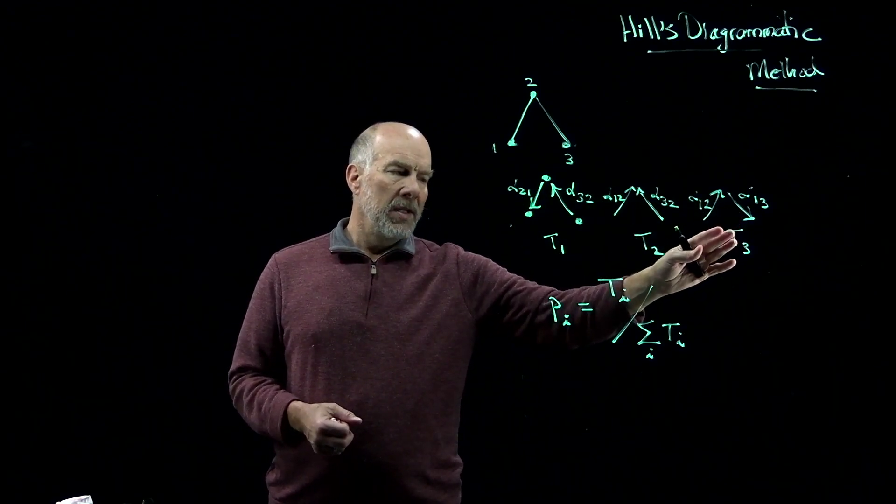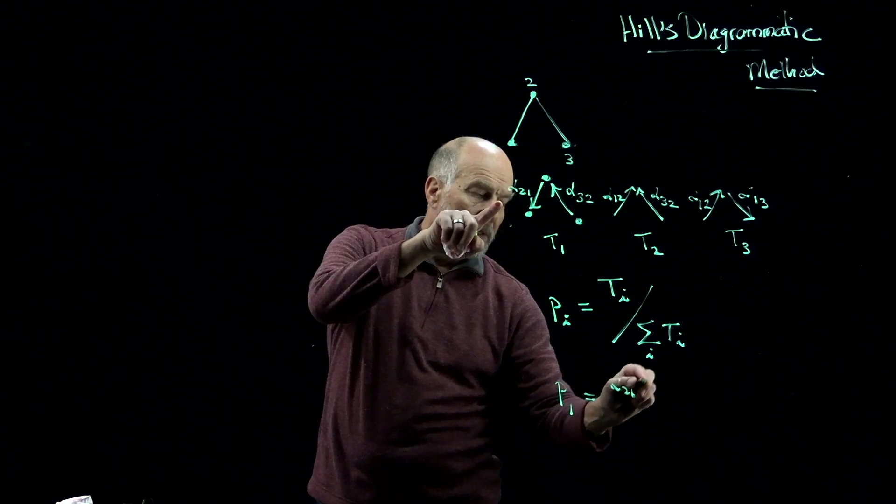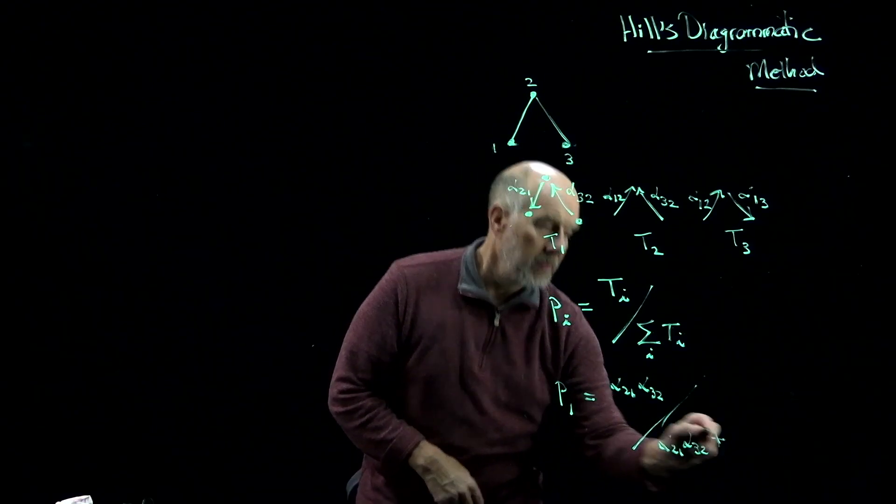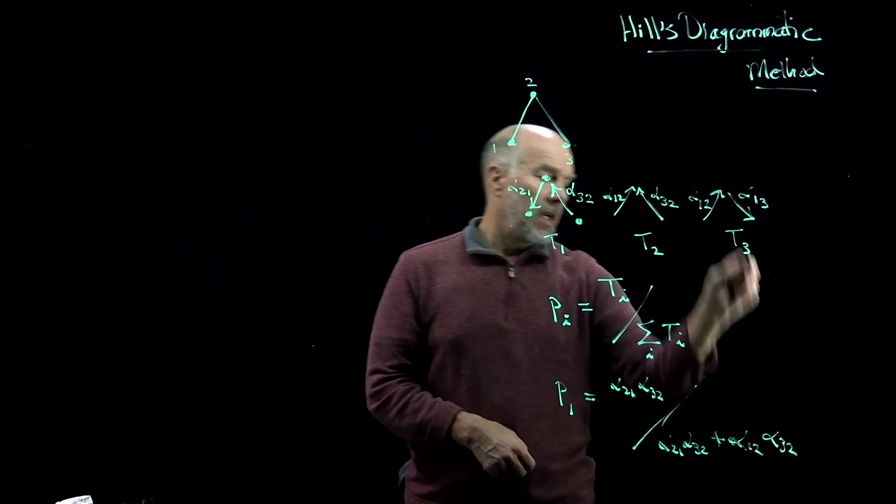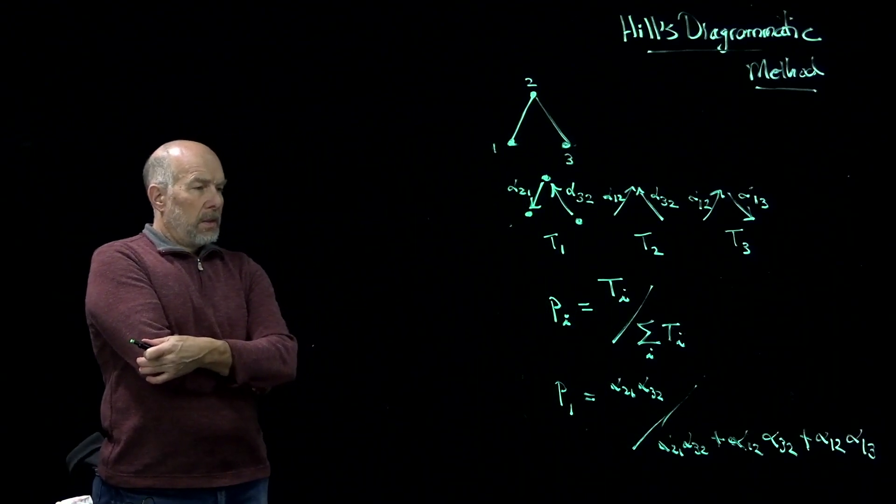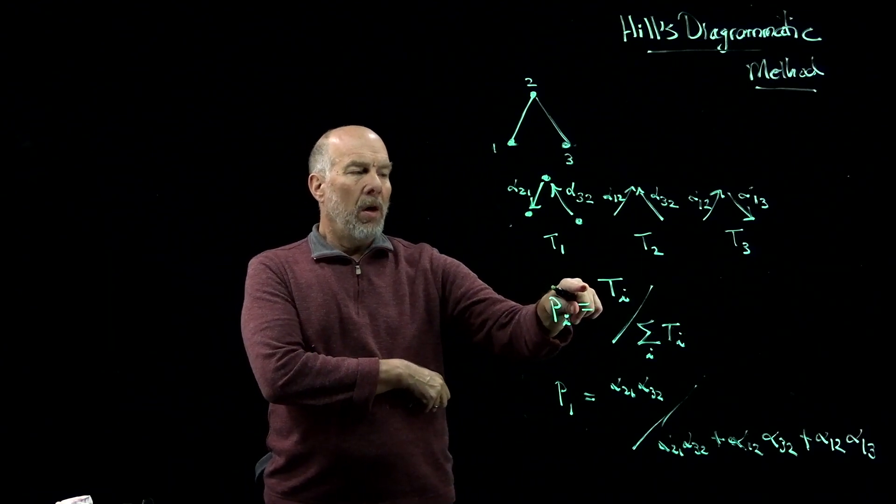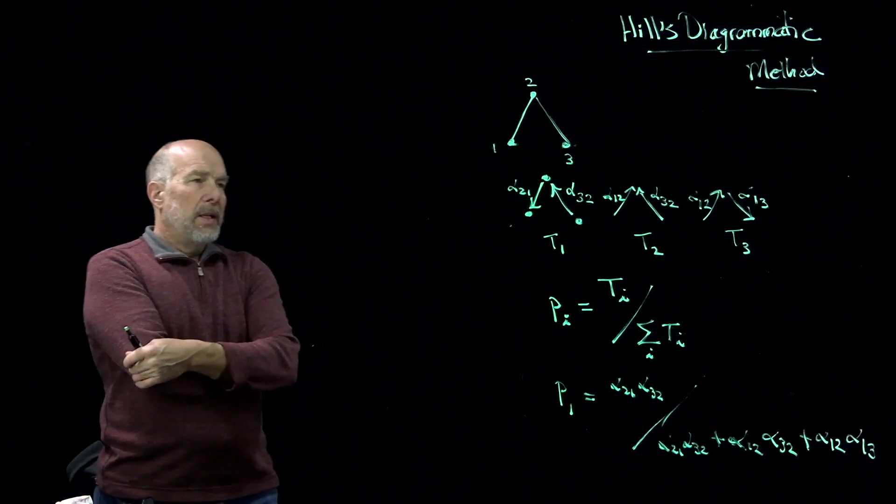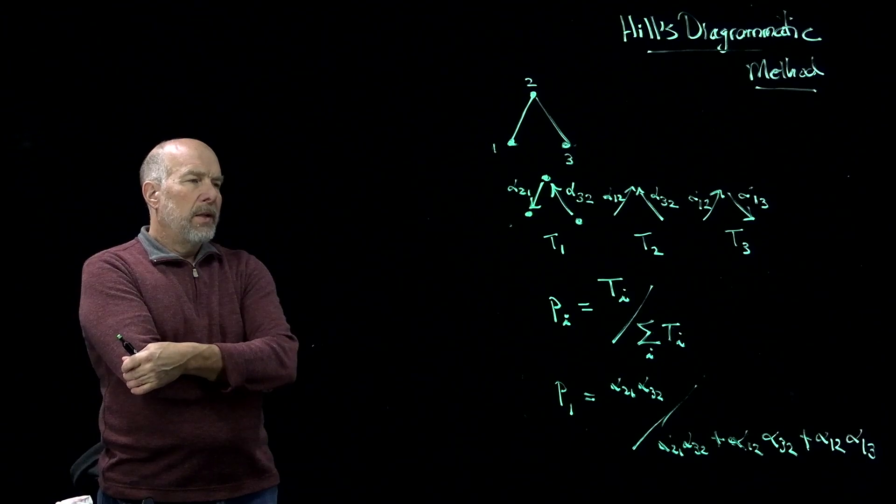In this case, there'll be three trees, and what this is telling me, for example, is that the probability of being in state one is alpha two one, alpha three two, divided by alpha two one, alpha three two, plus alpha one two, alpha three two, plus alpha one two, alpha one two. You can see that the condition that these probabilities have to add up to one is going to be satisfied because we have all of the possible numerator values being summed together here in the denominator, so when you add them all up, you'll get one. And it's an important theorem, like I said, it's called the Markov tree theorem, the Markov chain tree theorem, that this always works.